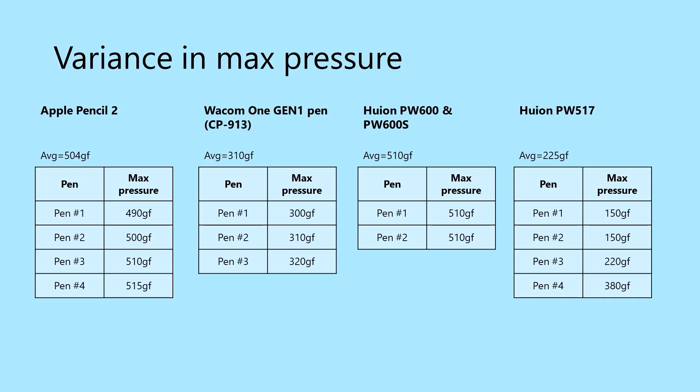But some variance is just due to the manufacturing of the pens. What this means is if you have several units of the same model of pen, you can often see that they behave slightly differently. I'm not good at testing initial activation force, but I am good at testing maximum pressure for a pen. So let's take a look at how maximum pressure can vary.